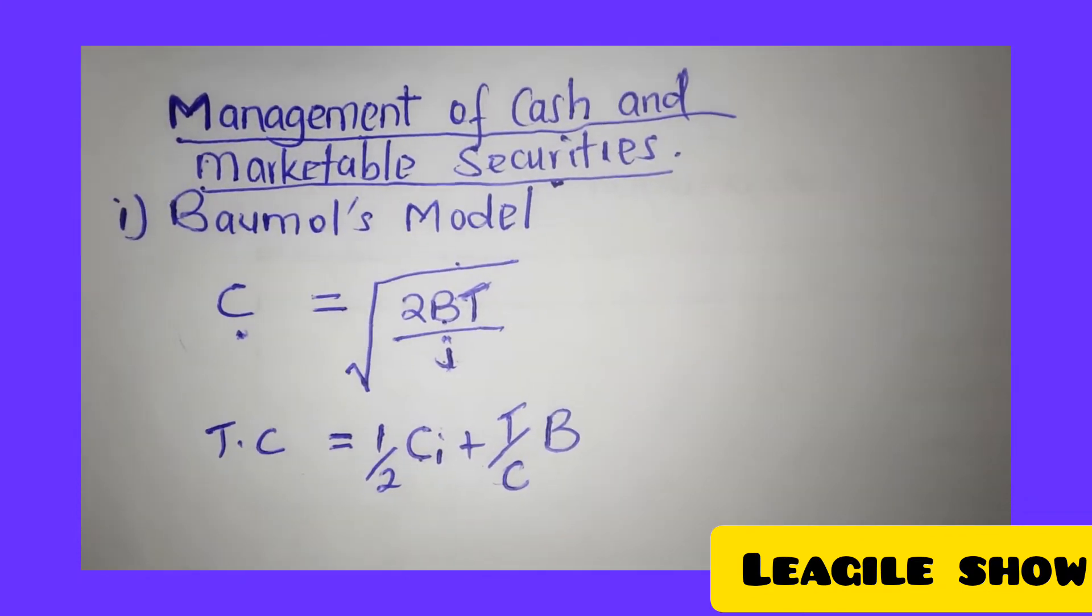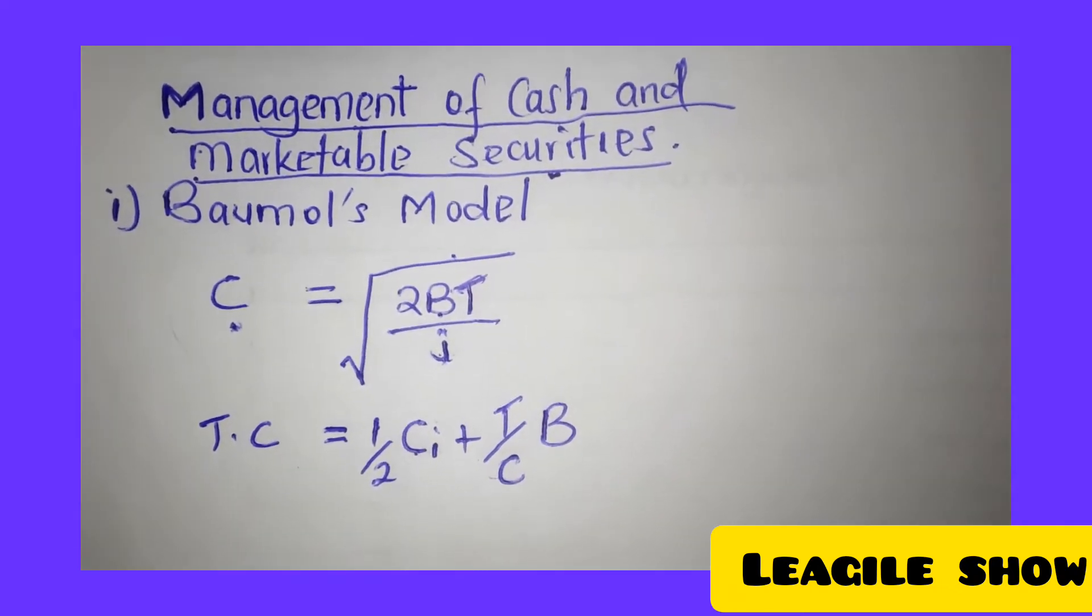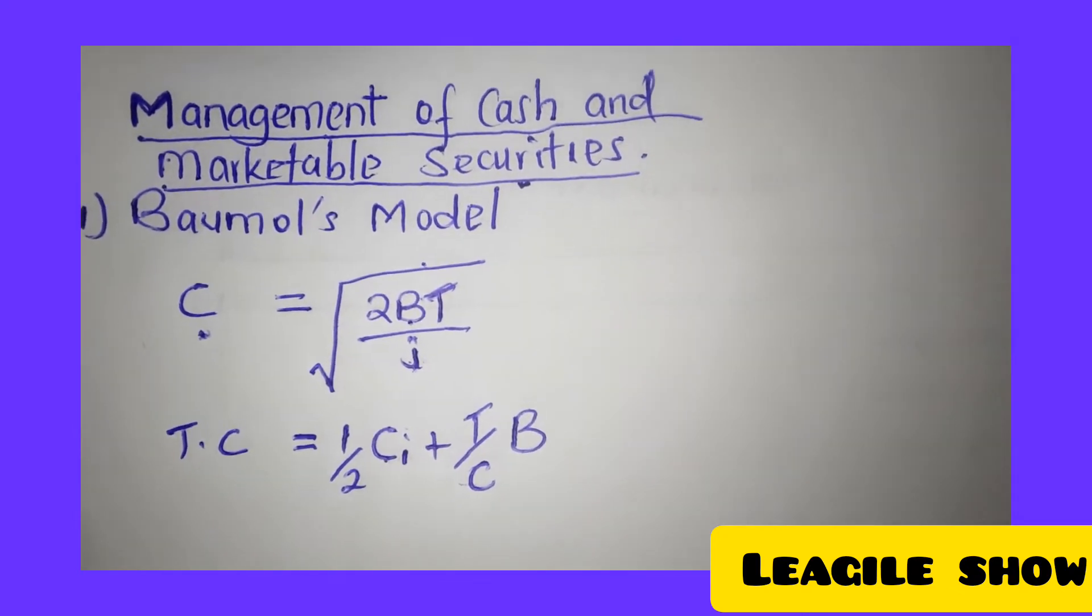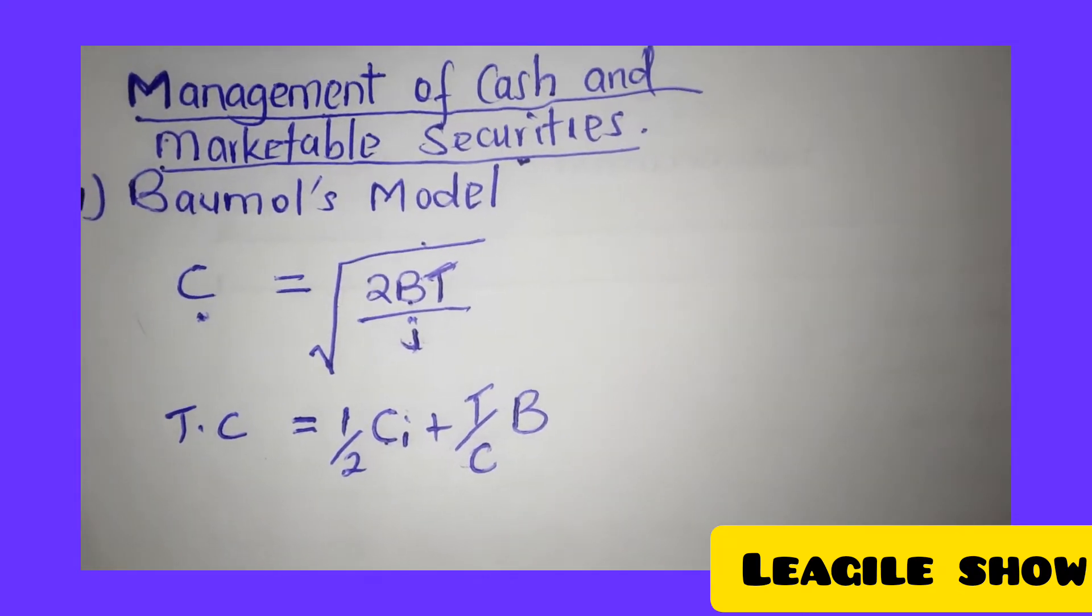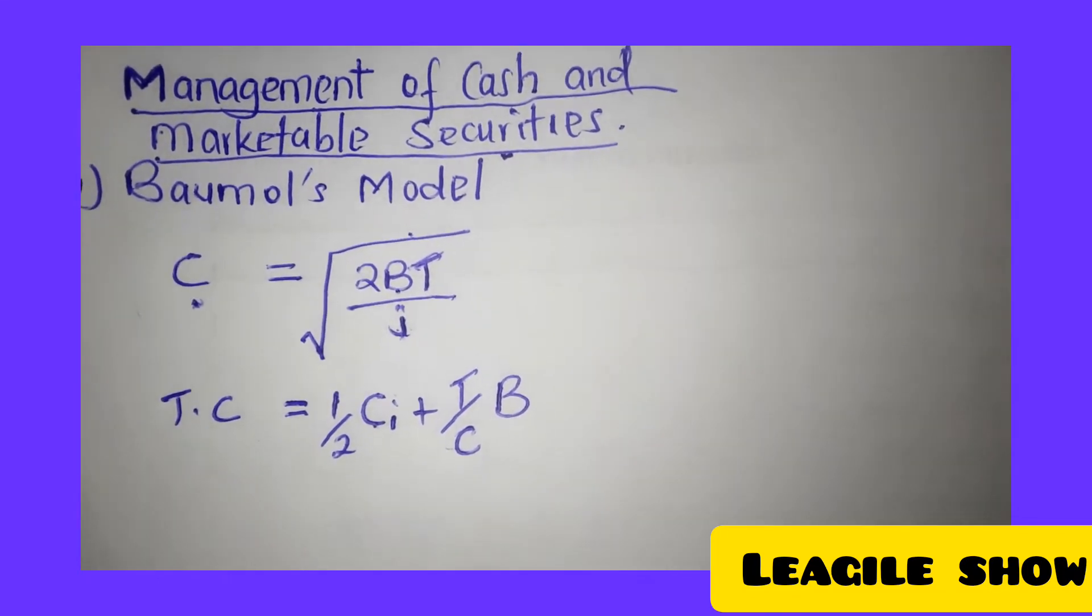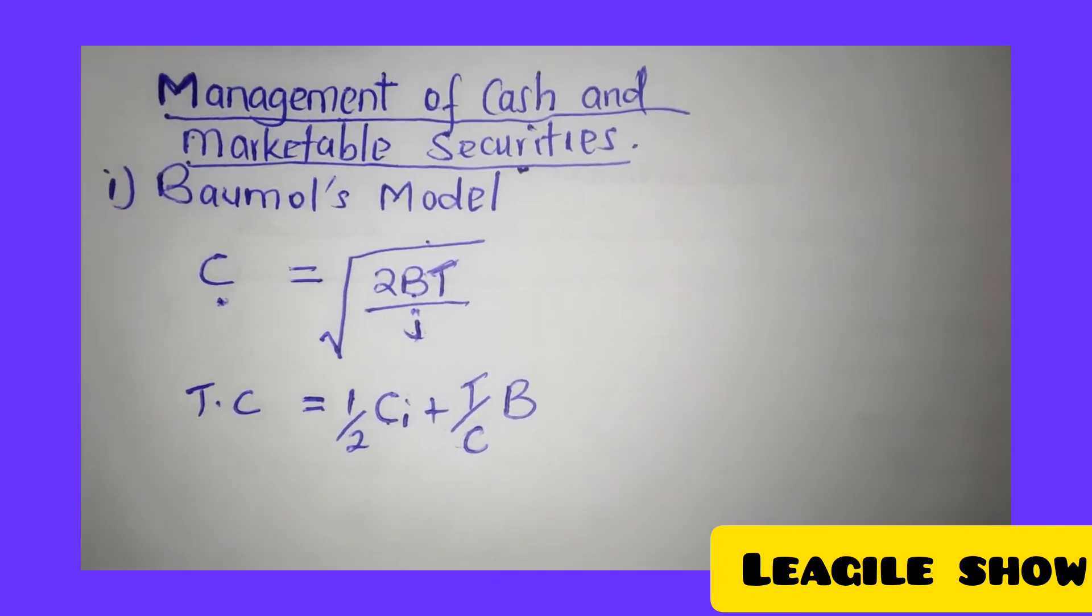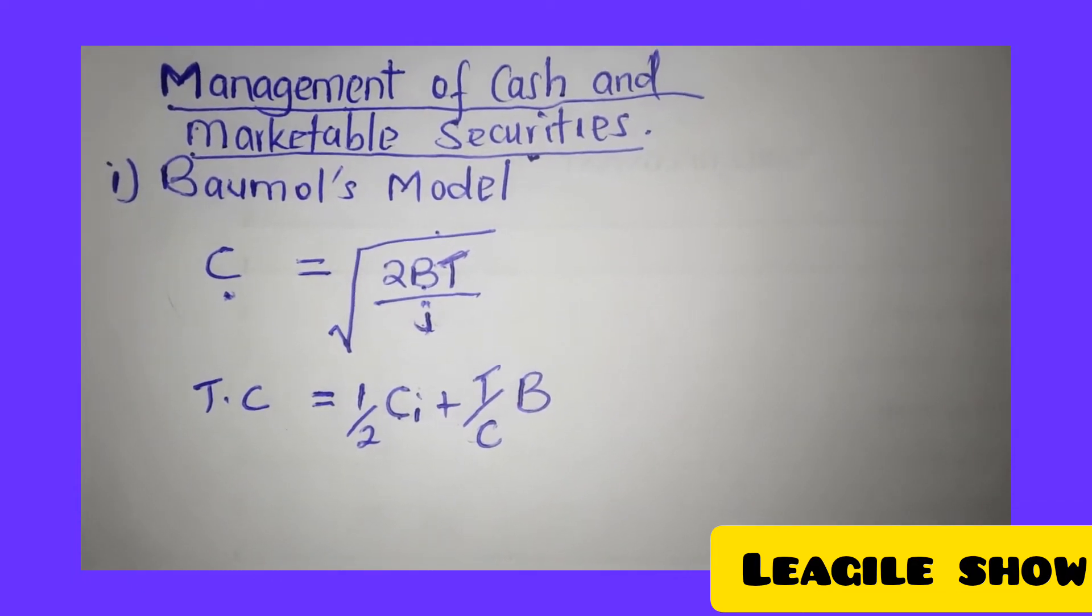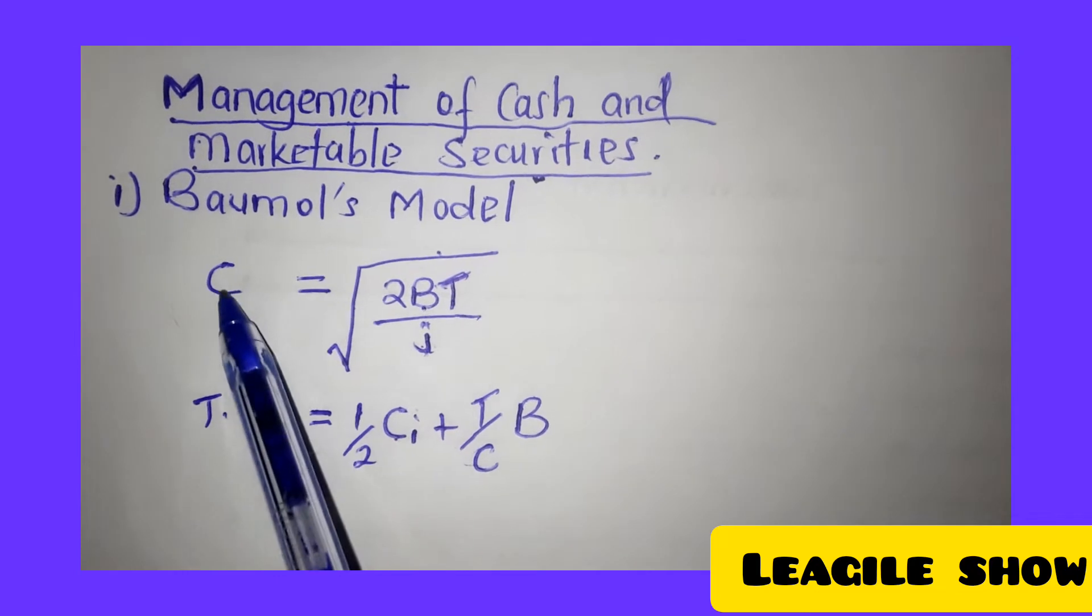To help us in this area, we'll be using two models. The first model is the Baumol's model, and we'll also be checking another model called the Miller-Orr model. Kindly be around till the end because we'll be able to explain all this one after the other. In this case, this is the formula of this kind of model.